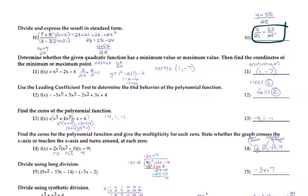Number 11 is max/min. Remember, look at what's in front of x squared — the coefficient a. If it's positive, it's a minimum; if it's negative, it's a maximum. Use negative b over 2a to find the x-coordinate of the vertex, then plug it back in to get the y. In this case, there's a minimum at (1, negative 7).